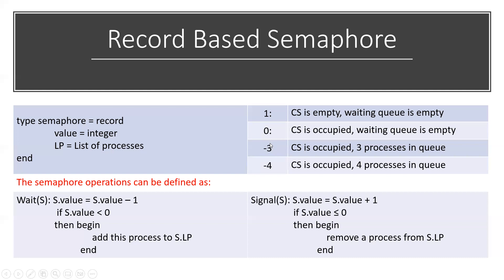Now, what does a negative value mean? For example, if the value variable is 1, it means the critical section is unoccupied and the waiting queue Q is also empty. If the value is 0, it means the critical section is occupied but the waiting queue is still empty — there is no process waiting to request the critical section.